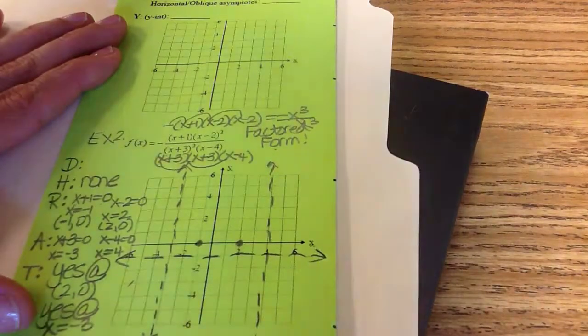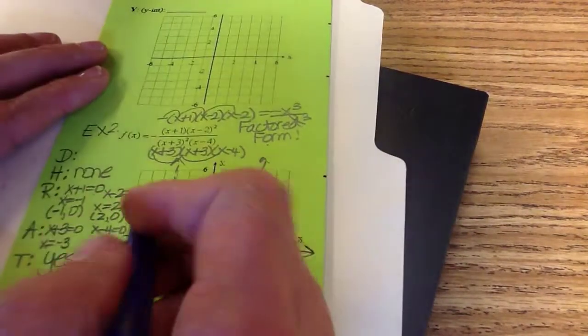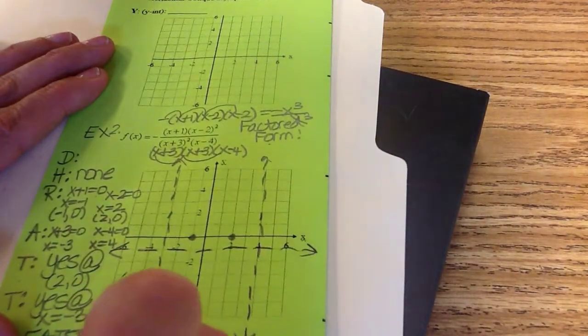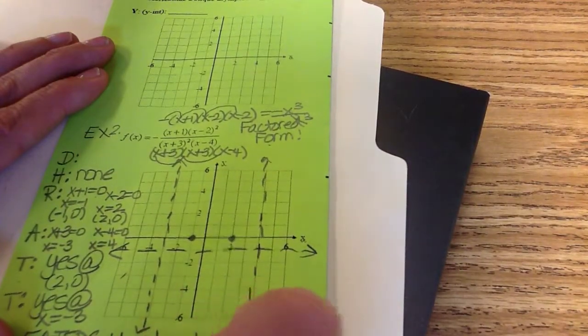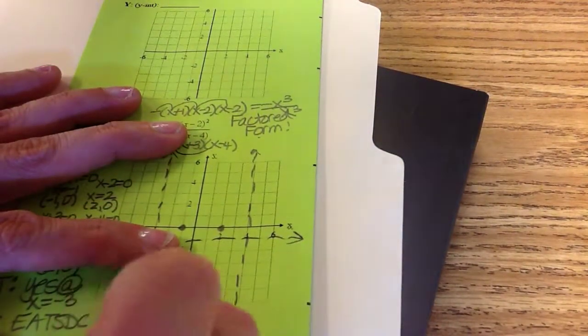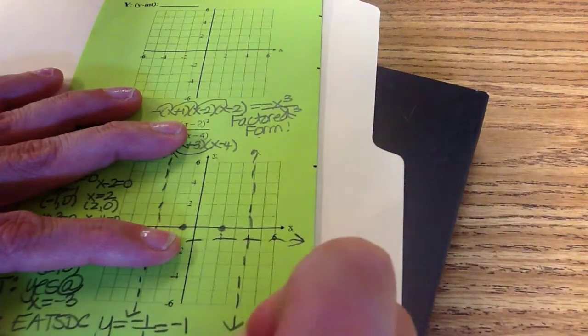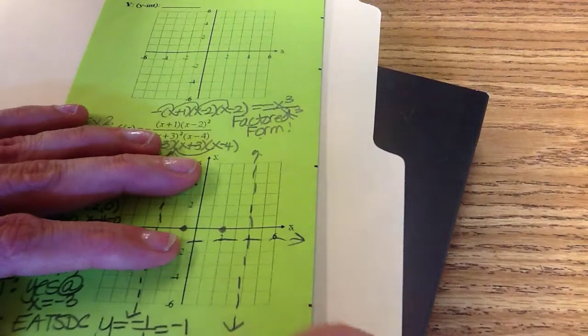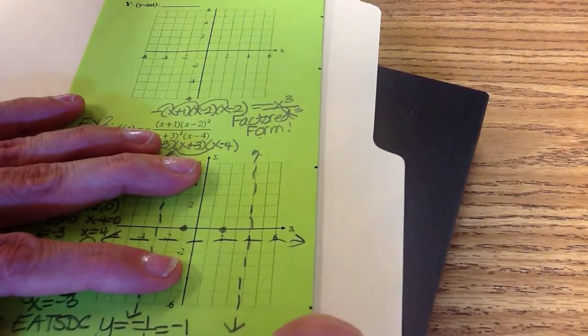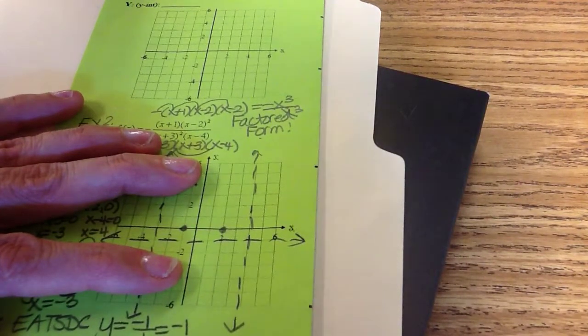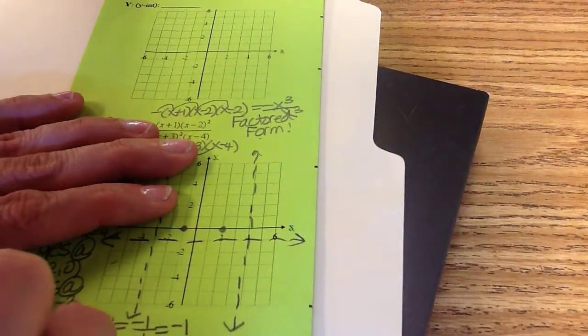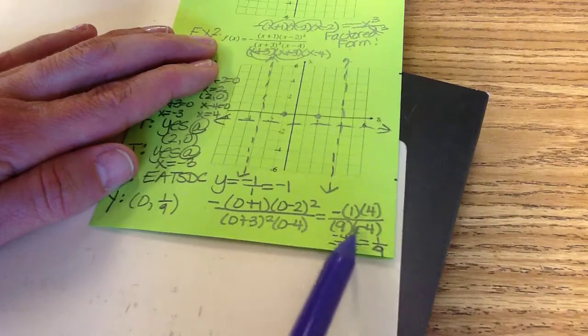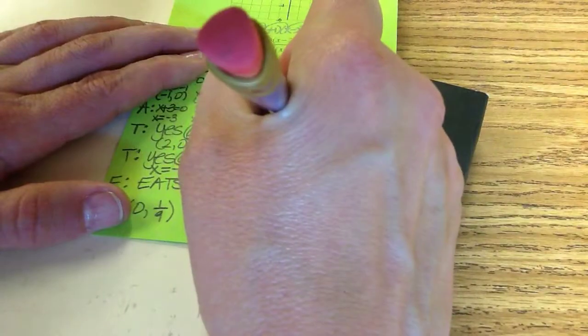The Y is where x is zero. That's finding your y-intercept. So I'm going to go back up here to my factored form and everywhere there's an x I'm going to put a zero. So don't lose your negative that's out there. Zero plus one is one. Zero minus two is negative two. Negative two squared is four. Zero plus three is three. Squared is nine. Zero minus four is negative four. Negative times one times four is negative four. Nine times negative four is negative thirty-six. So positive one, four thirty-sixths. Sorry. So your y-intercept is zero, one-ninth. All I did was put zero everywhere there's an x. I did the stuff inside the parentheses. Then I multiplied the top, multiplied the bottom, and simplified that fraction. So zero, one-ninth, I'm going to estimate where that is.